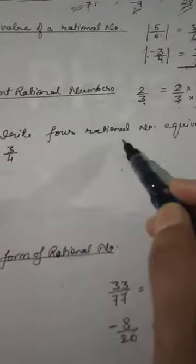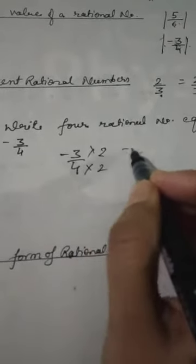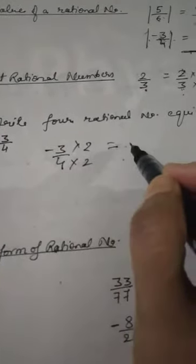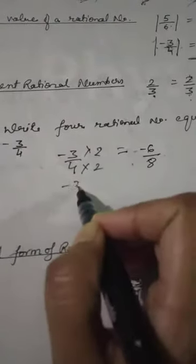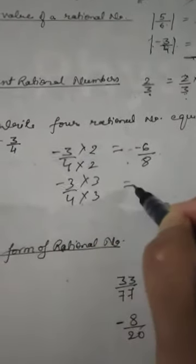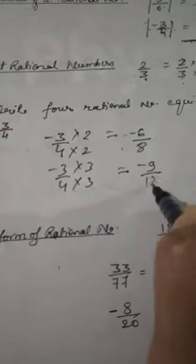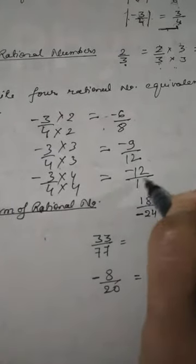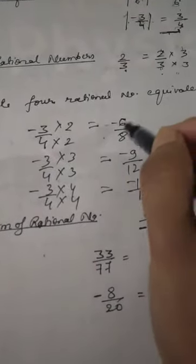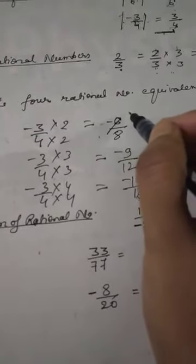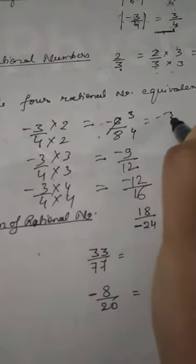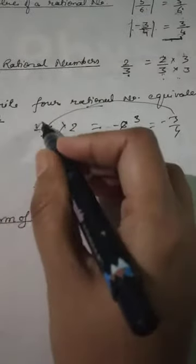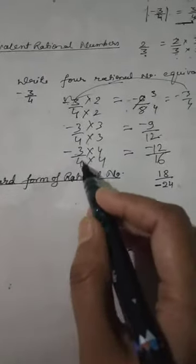Example: Write 4 rational numbers equivalent to −3/4. Multiply up and down by 2: −6/8. Multiply by 3: −9/12. Multiply by 4: −12/16. If you cancel them out, each gives the same value as −3/4. So these are equivalent forms of −3/4.